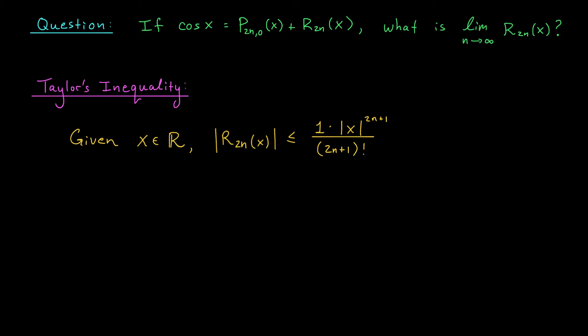Now to figure out what happens to this expression as n goes off to infinity, we're going to expand the numerator and the denominator to write this thing as a big product. We have |x|/(2n+1) times |x|/(2n) times |x|/(2n-1) all the way down to |x|/2 times |x|/1.